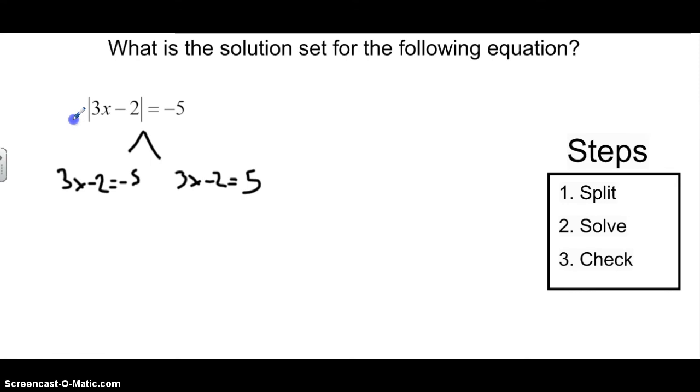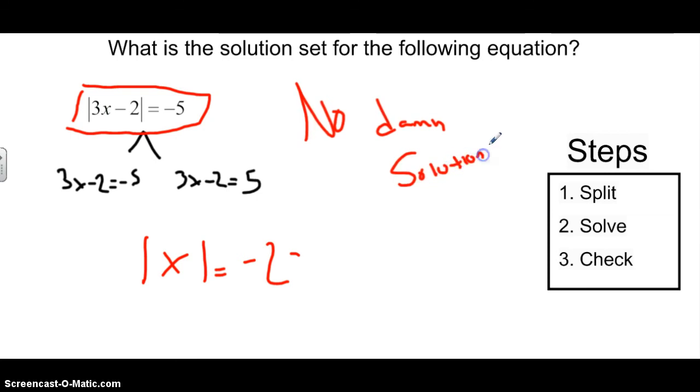And that is absolute values always have to be positive. So if I isolate my absolute value and it's equal to a negative number, that's impossible, right? Because if I just had this, the absolute value of anything must be greater than 1. I can't have this. I'll never get negative 2, and I'm never going to get a negative 5. So this has no solution. That's a no solution. Remember, if it's equal to a negative number after you isolate it, then there's no solution.